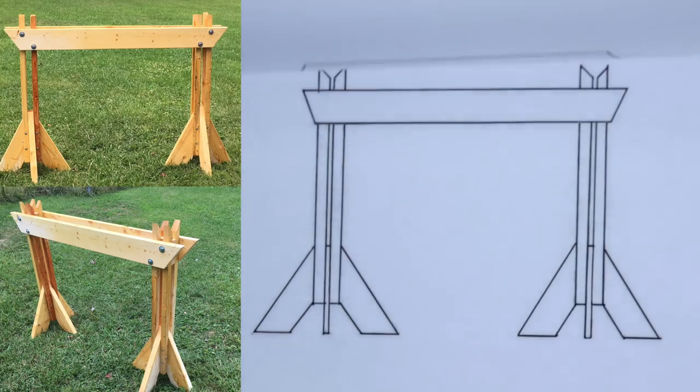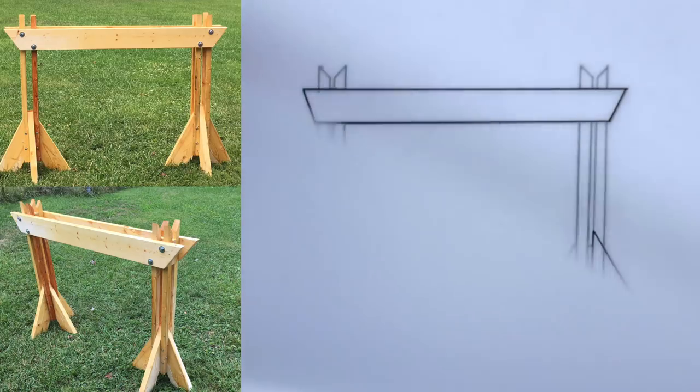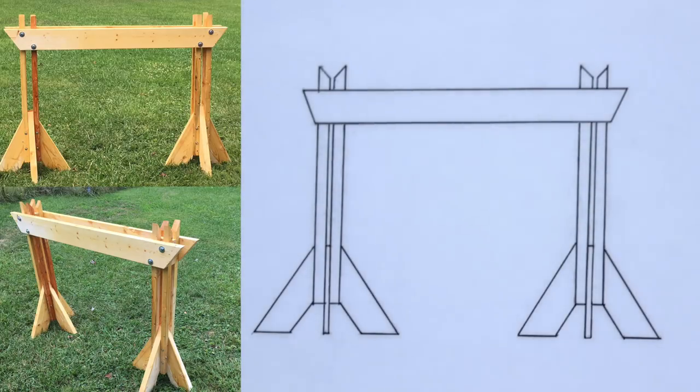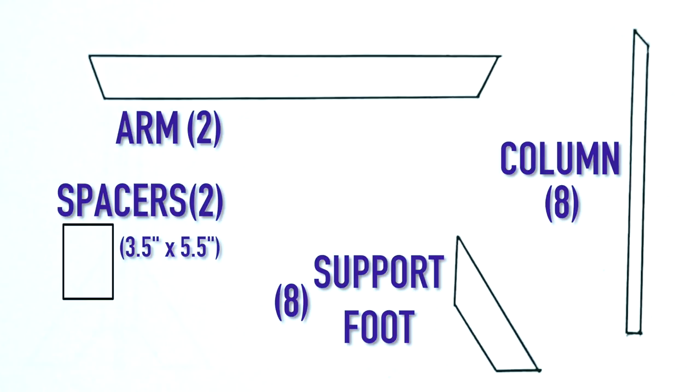This is probably by far the easiest project that I'm going to show you how to do. Really, you're only using these three pieces of wood. You have the top arms and they will connect the two columns, and then at the bottom that slanted piece of wood that is for the support feet. You'll have eight of those, and then you'll have eight columns. Before I forget, you'll want two spacers, just scraps of wood. We'll put them on at the very end.